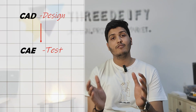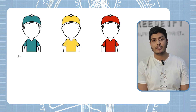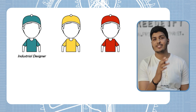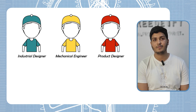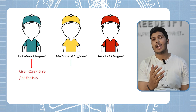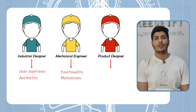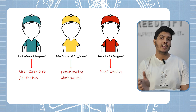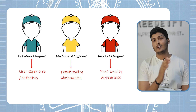To sum up, the development starts from CAD where we design, to CAE where we test, to CAM where we do the manufacturing. Now let's explore the roles of industrial and product designers. We have three roles: the industrial designer, the mechanical engineer, and the product designer. Industrial designers focus on user experience and aesthetics, mechanical engineers focus on functionality and mechanisms, and product designers often bridge the gap, considering both functionality and appearance to meet market needs.